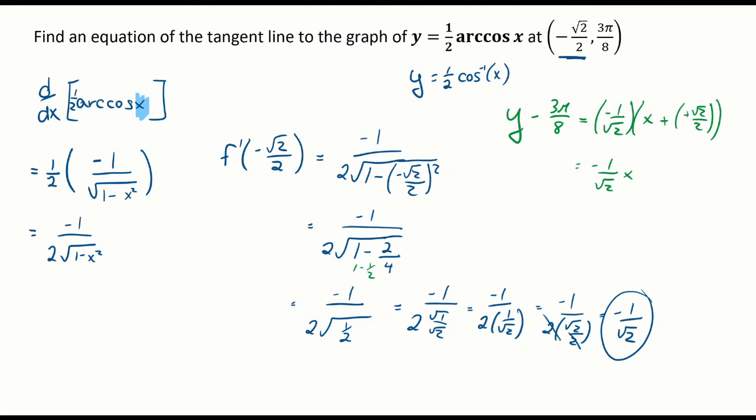This becomes positive from the two negatives, but then I have to multiply by a negative. So I have 1 over the square root of 2 times square root of 2 over 2, and the square roots cancel out. So I have negative 1 over the square root of 2 times x minus 1/2. On my left side, I have y minus 3π/8.